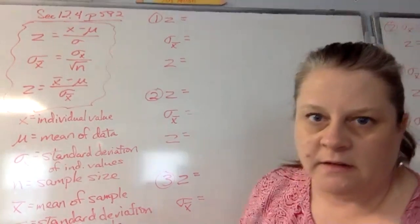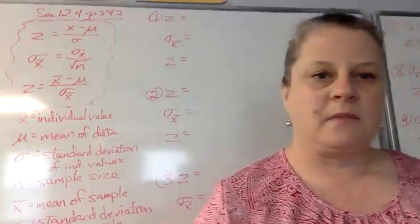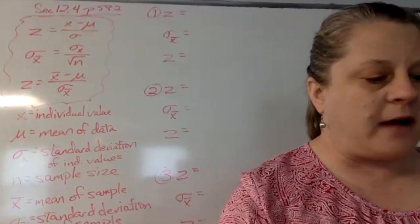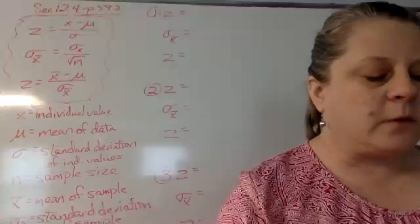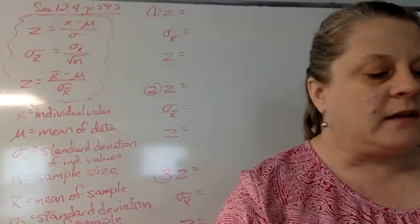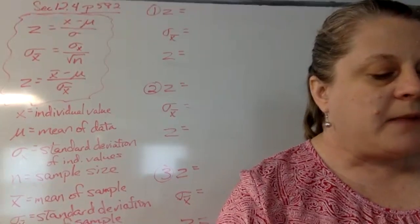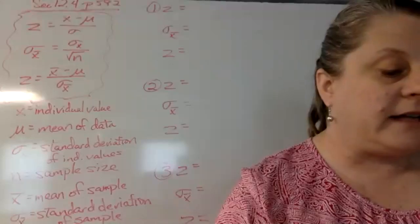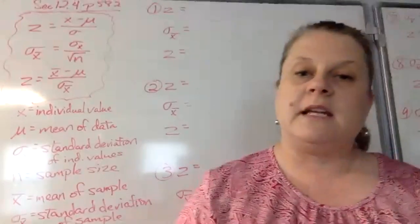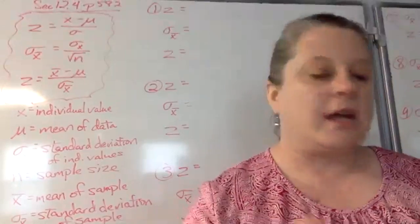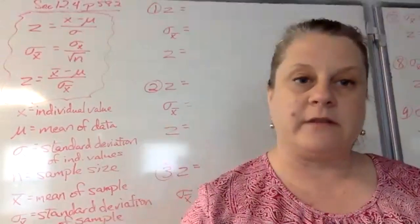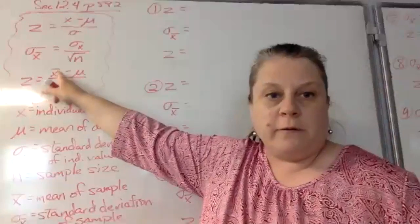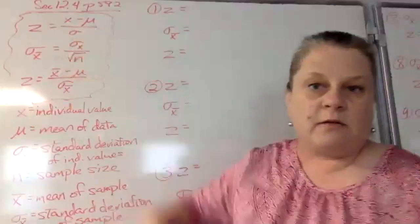Number one on page 582: suppose a group of athletes' averages for running a mile follows a normal distribution where mu equals 474 seconds, with a standard deviation of 18 seconds. Compare the z-scores of a single athlete's time of 438 seconds with the average of six athletes' time of 461 seconds. When you're doing these, you'll have two things in the problem: a single person's value and an average of so many of them. Remember, average is another word for mean, so that's why we get two separate z-scores.